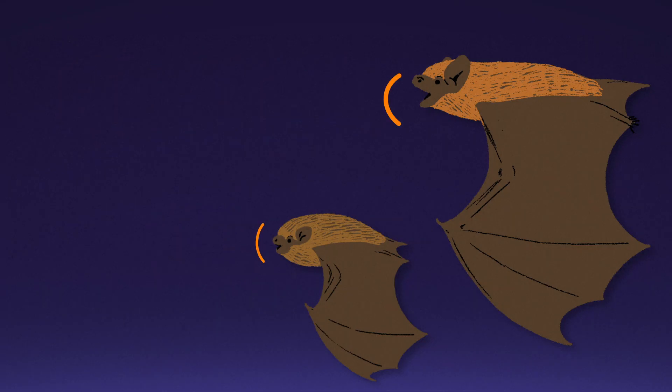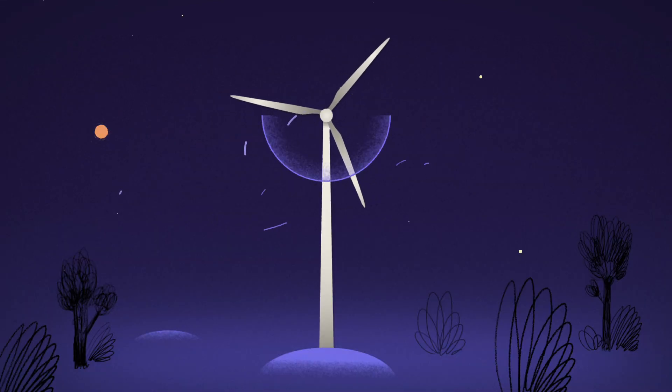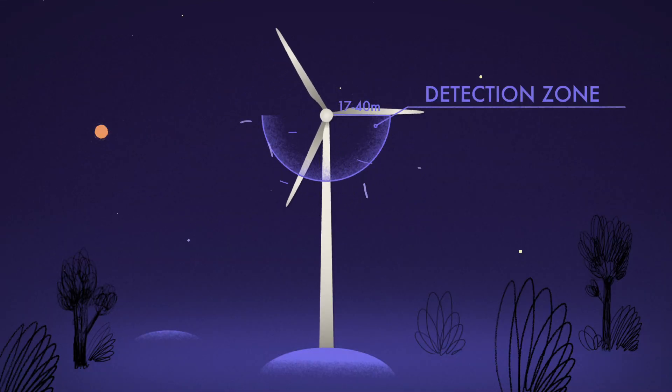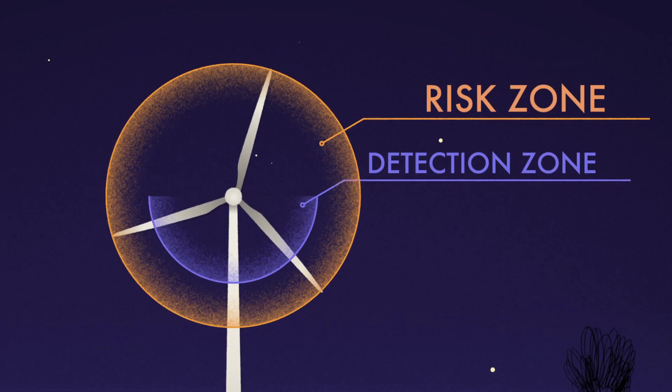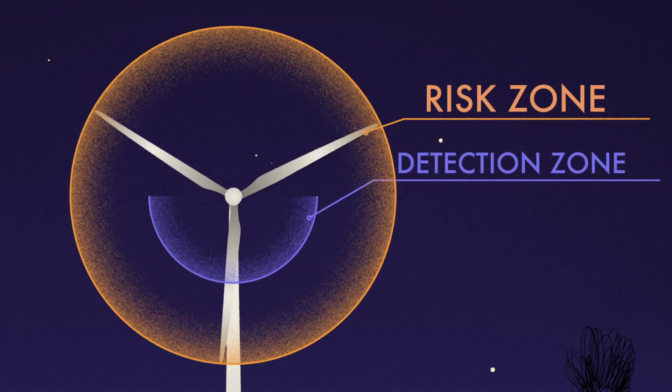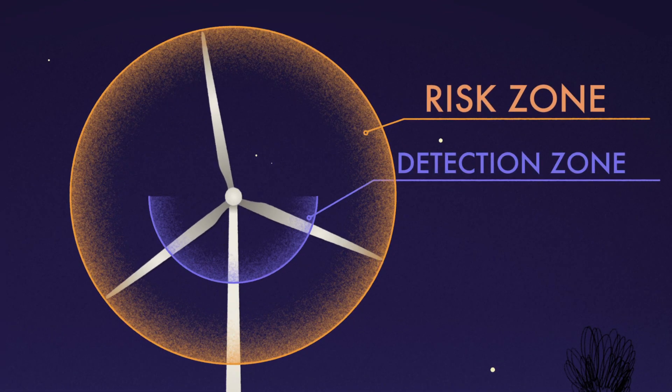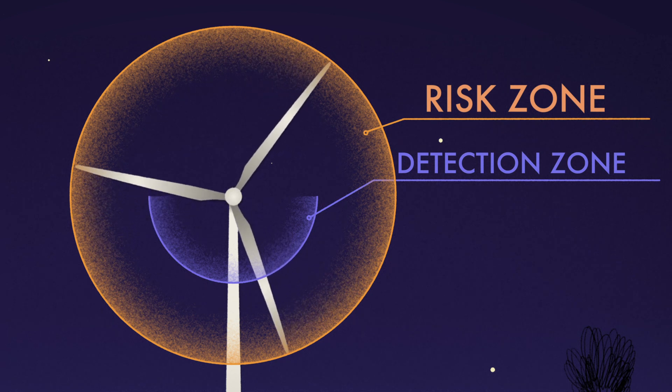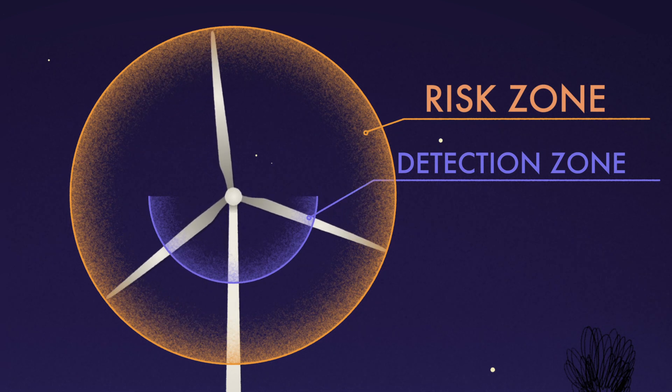Depending on the bat species, the ultrasonic detectors can detect animals within a radius of a maximum of 17 to 40 meters. However, since the rotor blades usually reach much further than that, this radius is not enough to completely cover the zone where bats are at risk.